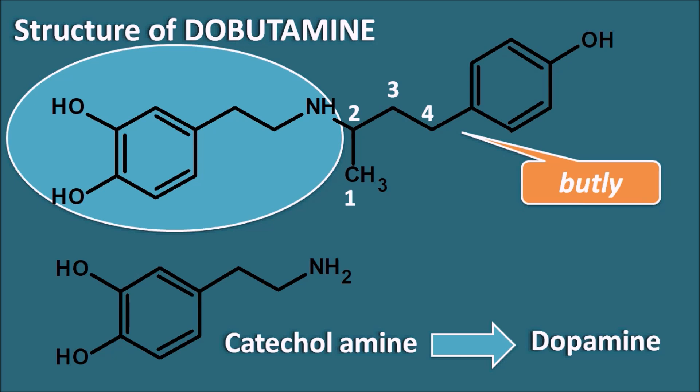This butyl chain is further attached with the para-hydroxy phenyl ring system. In this way Dobutamine is a larger structure compared with dopamine, modified with a butyl substitution on the amine group which is further attached with the para-hydroxy phenyl ring system. Because of these structural modifications, Dobutamine has no affinity towards the dopamine receptors, but it is selective mainly for beta-1 receptors with little effect on beta-2 and alpha-1 receptors.